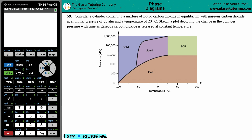Number 59. Consider a cylinder containing a mixture of liquid carbon dioxide in equilibrium with gaseous carbon dioxide at an initial pressure of 65 atm and a temperature of 20 degrees Celsius. Sketch a plot depicting the change in the cylinder pressure with time as the gaseous carbon dioxide is released at that constant temperature.